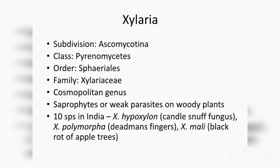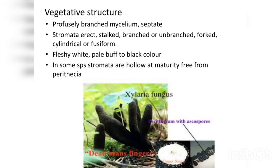When we take Ascomycotina, we can see that the vegetative structure is different. For yeast, it is unicellular, but in others it is multicellular. In Xylaria, it is multicellular. Coming to the vegetative structure, the mycelium is profusely branched, and this mycelium is septate. We have already talked about the septa — it is simple septa.